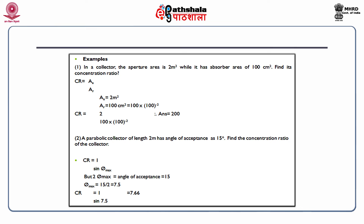Let's see an example. In a collector, the aperture area is 2 m² while the absorber area is 100 cm². The concentration ratio CR equals AA divided by AR. AA equals 2 m² and AR equals 100 cm², which we convert to m² first. CR equals 2 divided by (100 × 10⁻⁴), giving an answer of 200 — that is the concentration ratio of that collector.